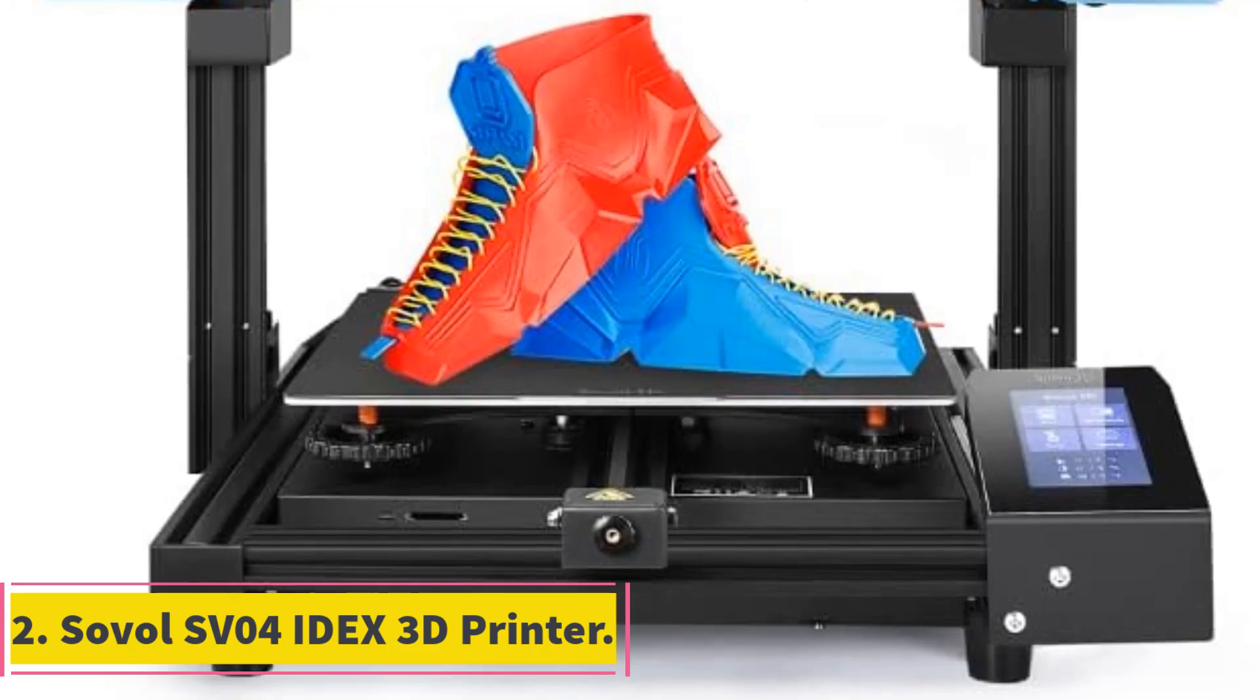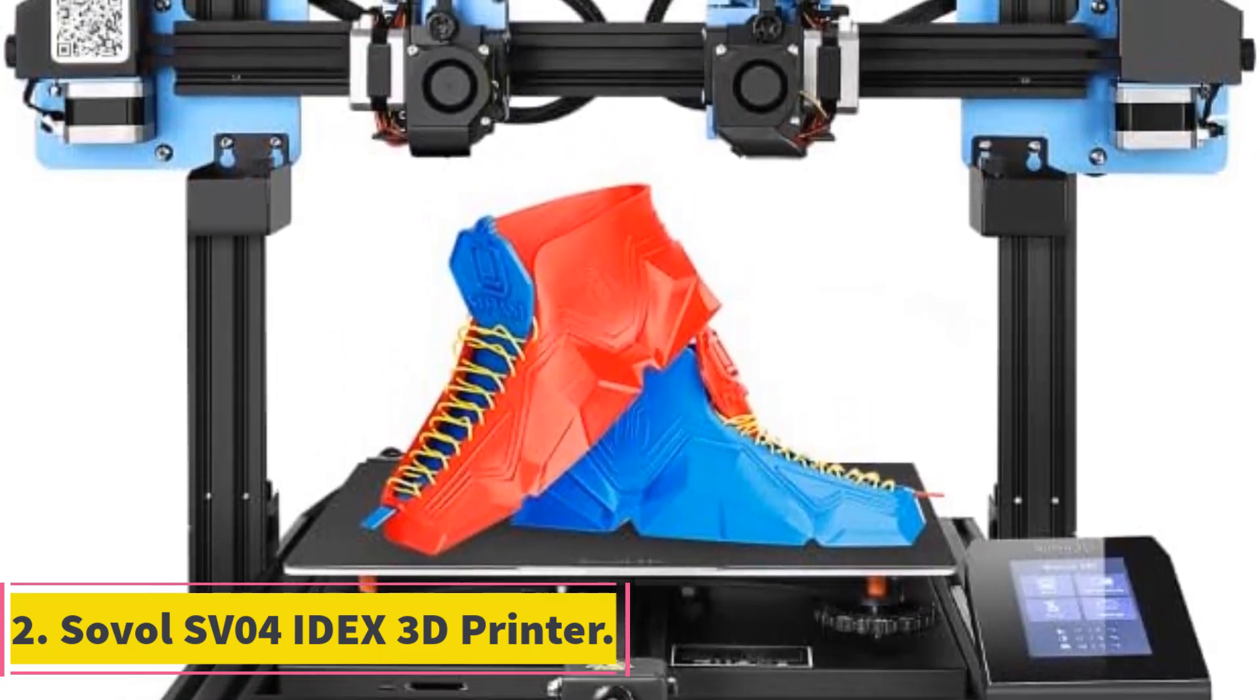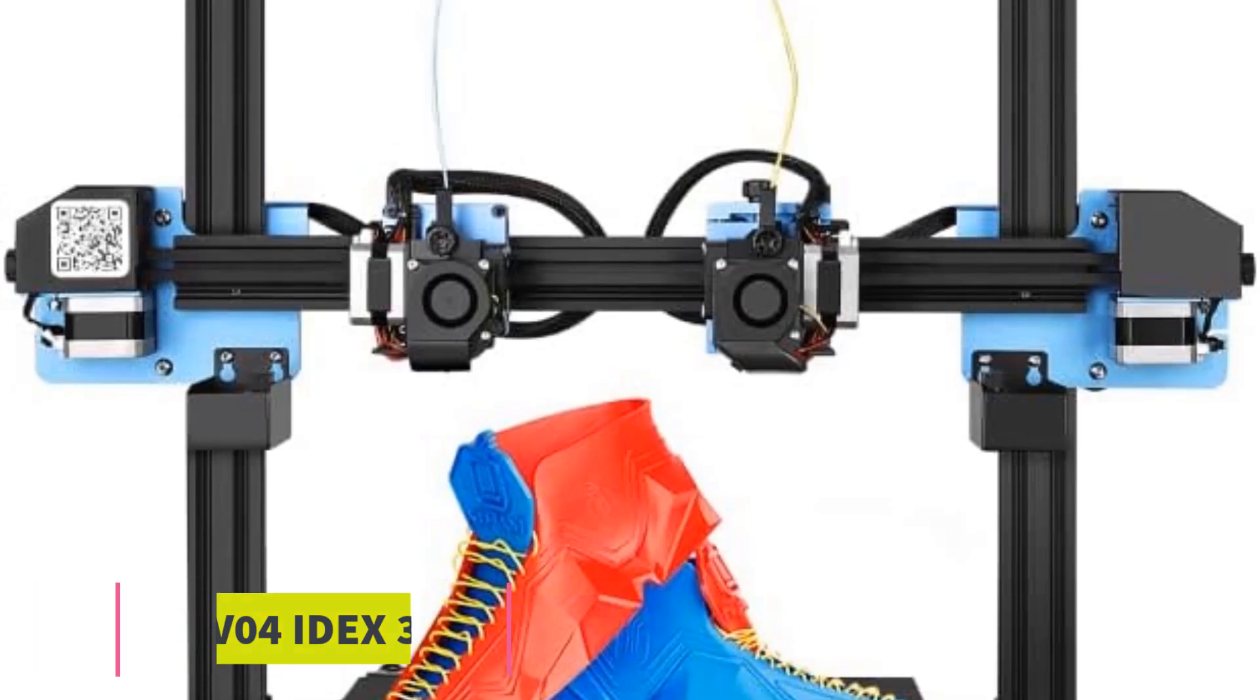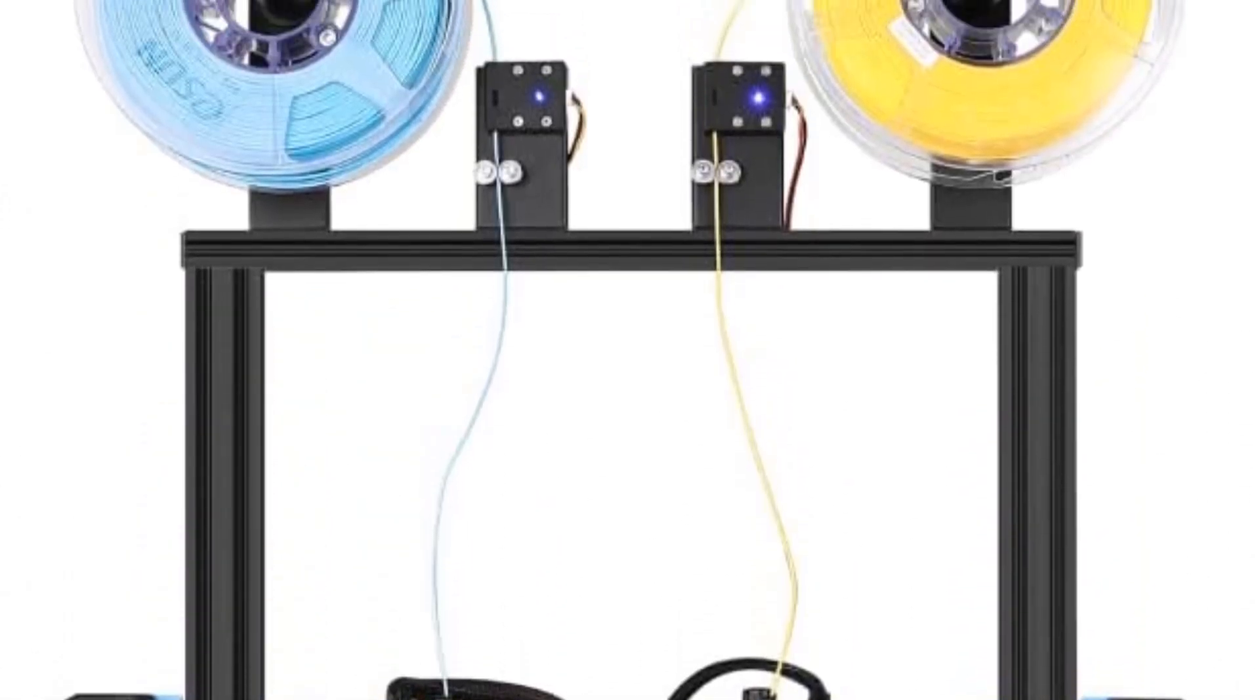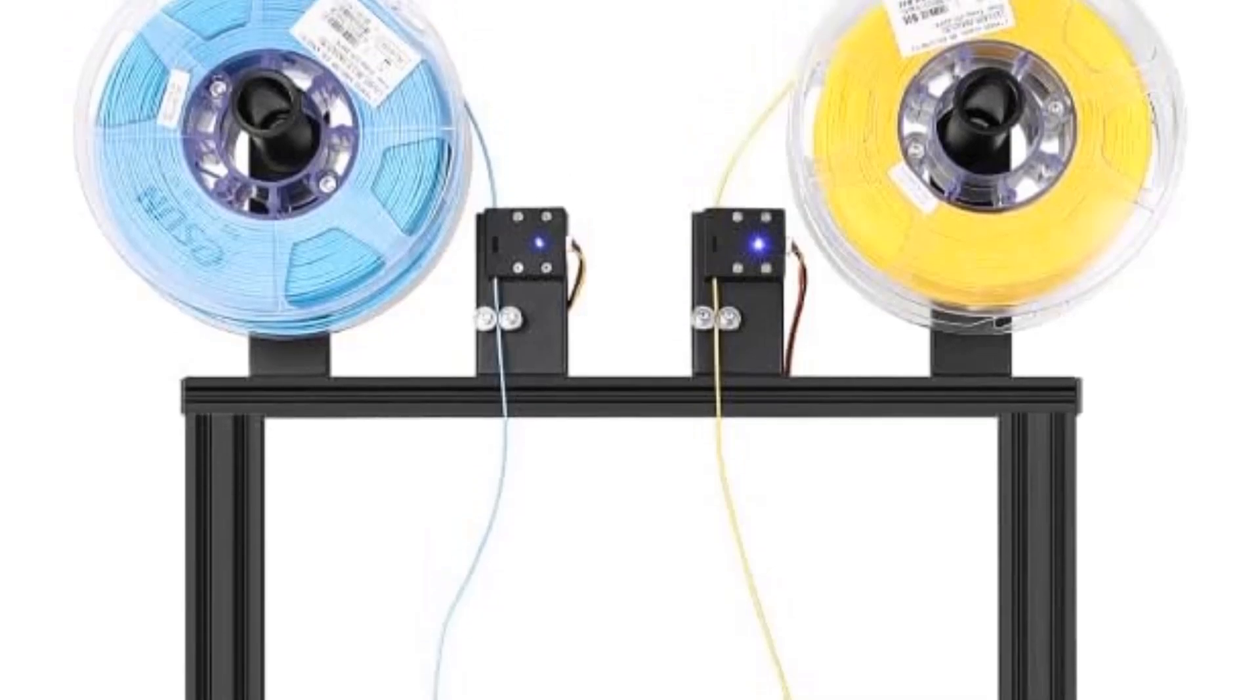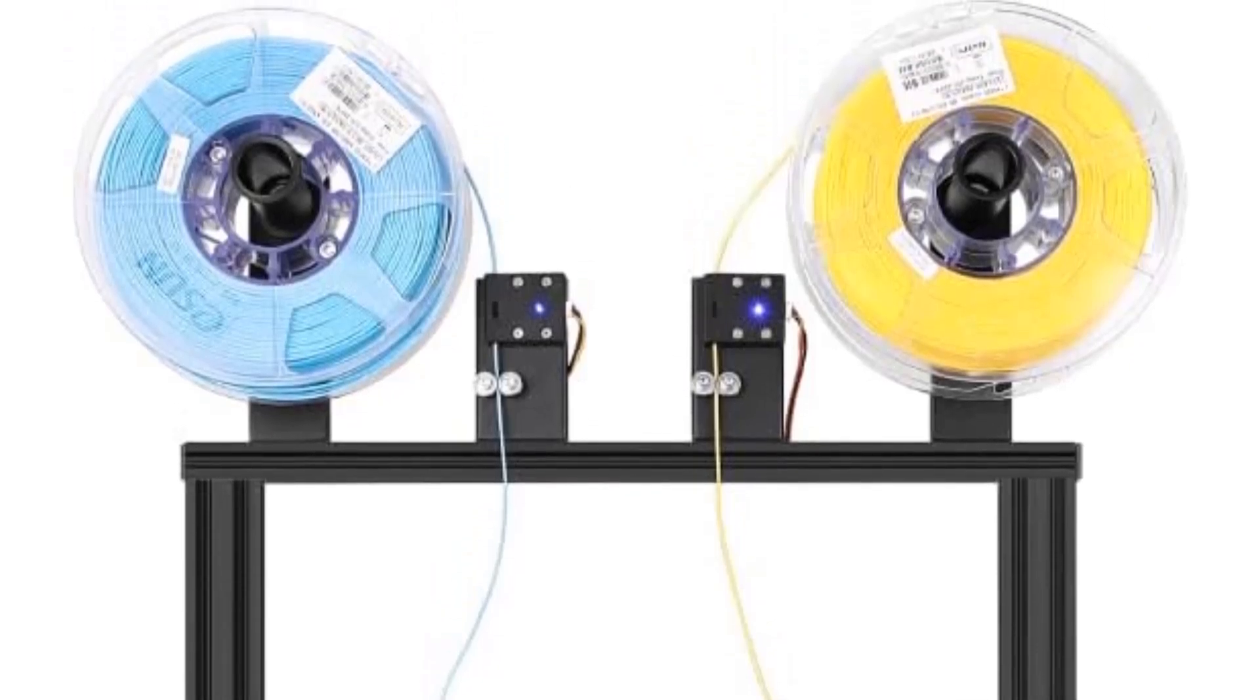Number 2: Sovel SV04 IDEX 3D printer. The Sovel SV04 3D printer features independent dual direct-drive metal extruders, enabling the printing of two different colors, materials, or models simultaneously.